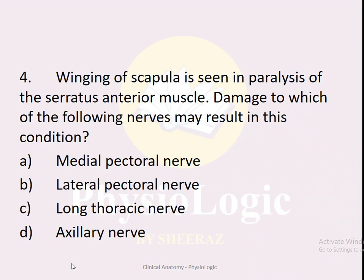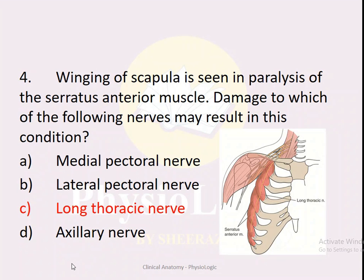MCQ number four: Winging of scapula is seen in paralysis of serratus anterior. Damage to which nerve results in this condition? Options: A — medial pectoral nerve, B — lateral pectoral nerve, C — long thoracic nerve, D — axillary nerve. The correct option is C — the long thoracic nerve supplies serratus anterior, so damage to it results in winging of scapula, as discussed in the previous MCQ.